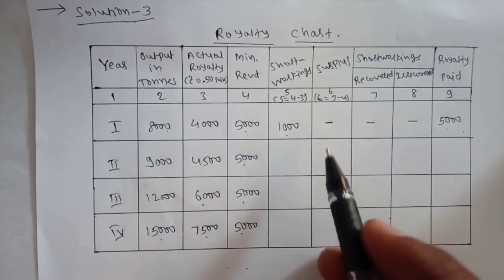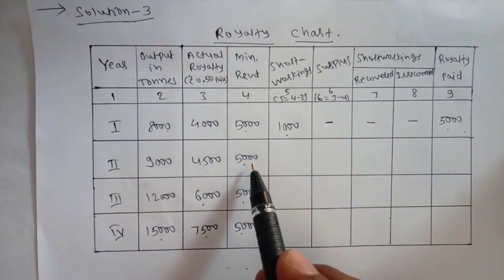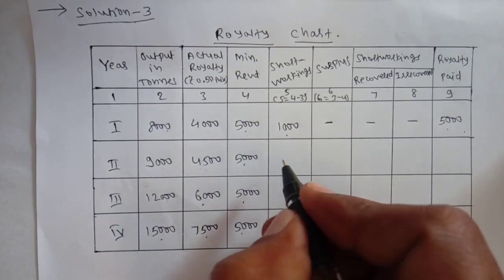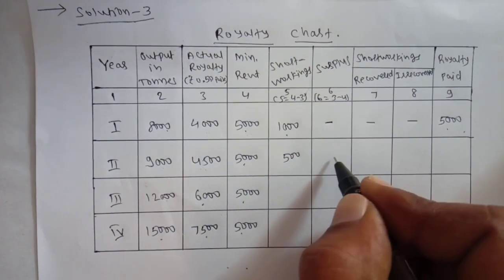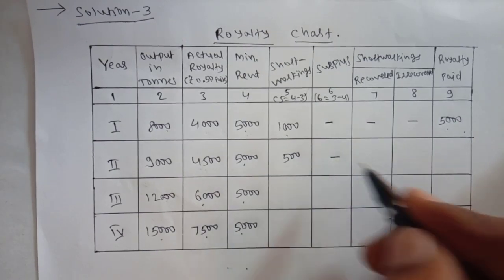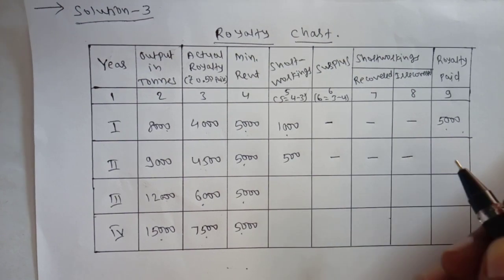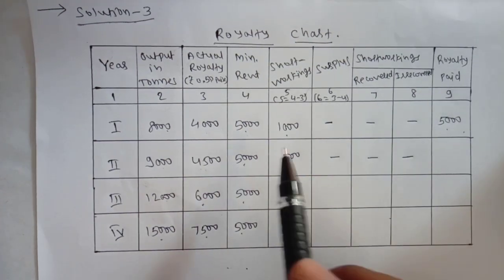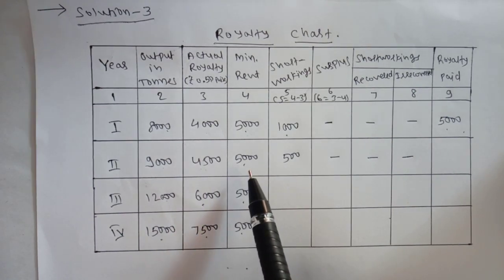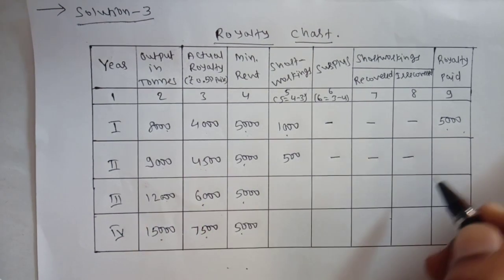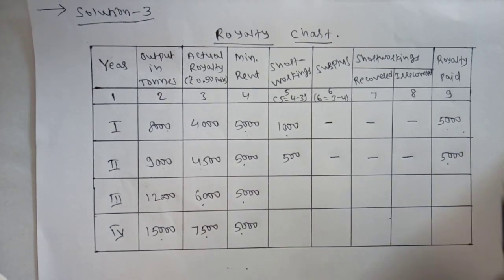In the second year, 4,500 is actual royalty and minimum rent is 5,000. So here also, actual royalty is less than minimum rent, giving a short working of 500. There is no surplus, no recovered short workings, and irrecovered short workings are also nil. Actual royalty paid is whichever is higher — comparing 4,500 and 5,000, here also 5,000 is more, so 5,000 is paid as royalty.